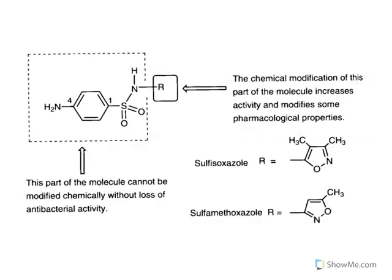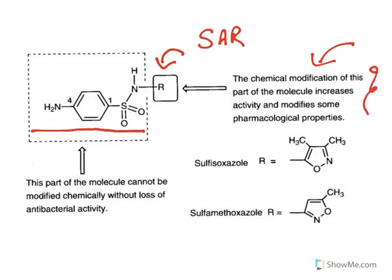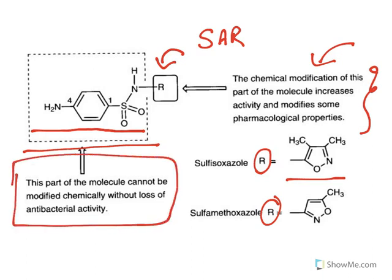Regarding structure-activity relationship: all sulfonamides share a core structure, with the only difference being substitution at the amino group. Chemical modification of this part of the molecule increases activity and modifies pharmacological properties — mostly the R group is an electron-withdrawing heterocyclic ring. The remaining part of the molecule cannot be chemically modified without loss of antibacterial activity, making it the pharmacophore — the functional groups responsible for the mechanism of action.